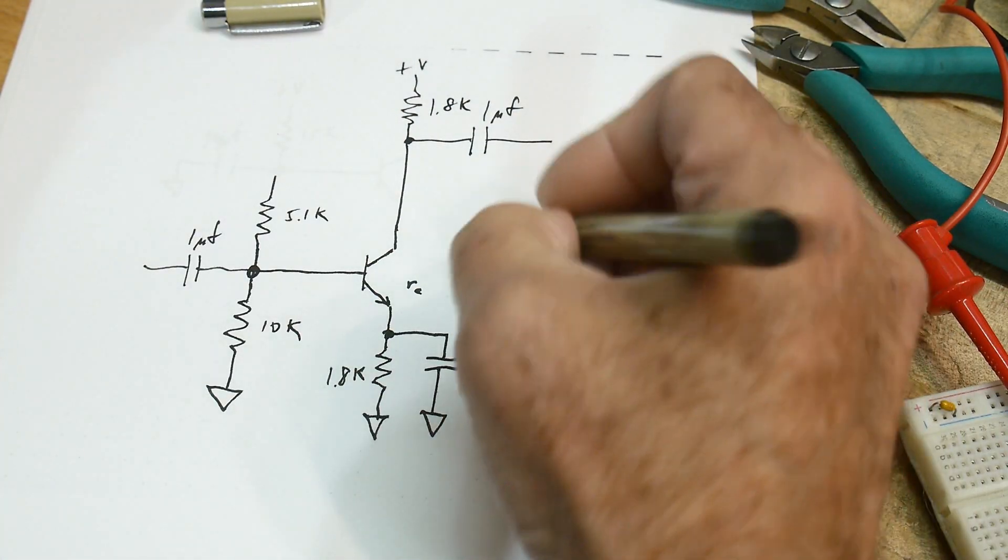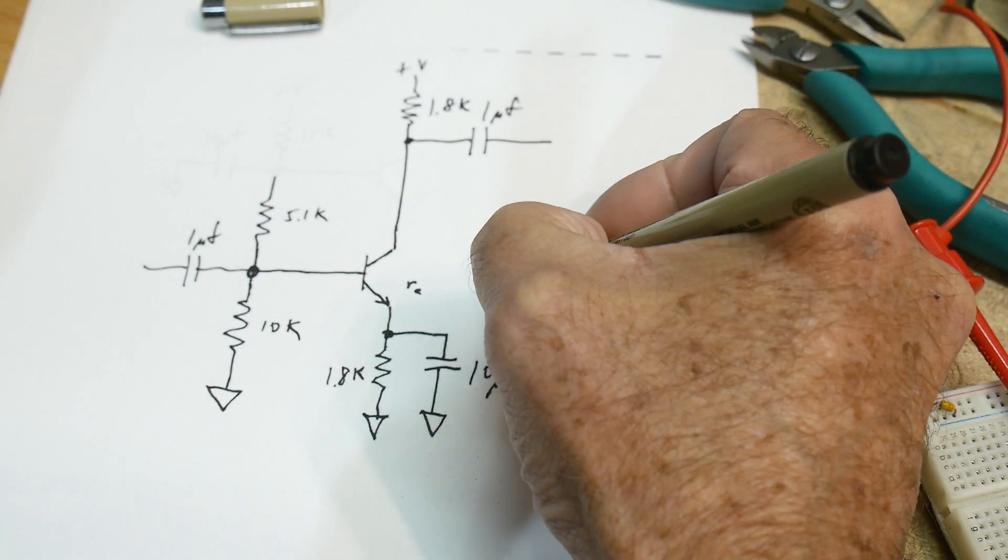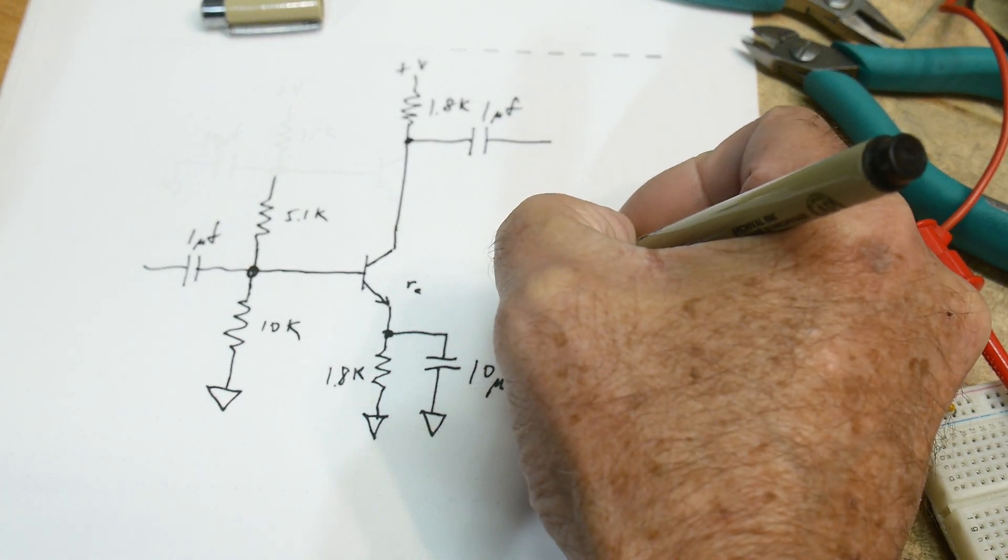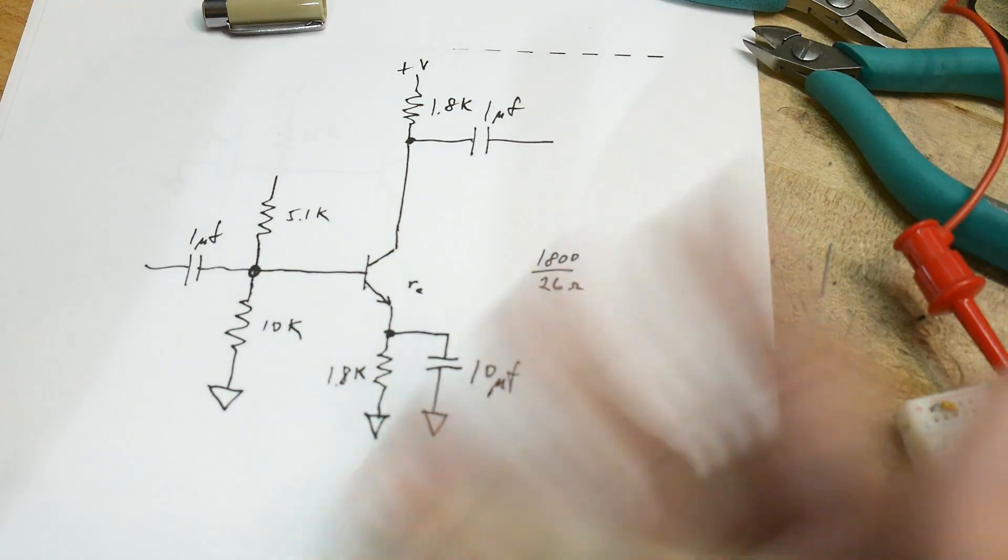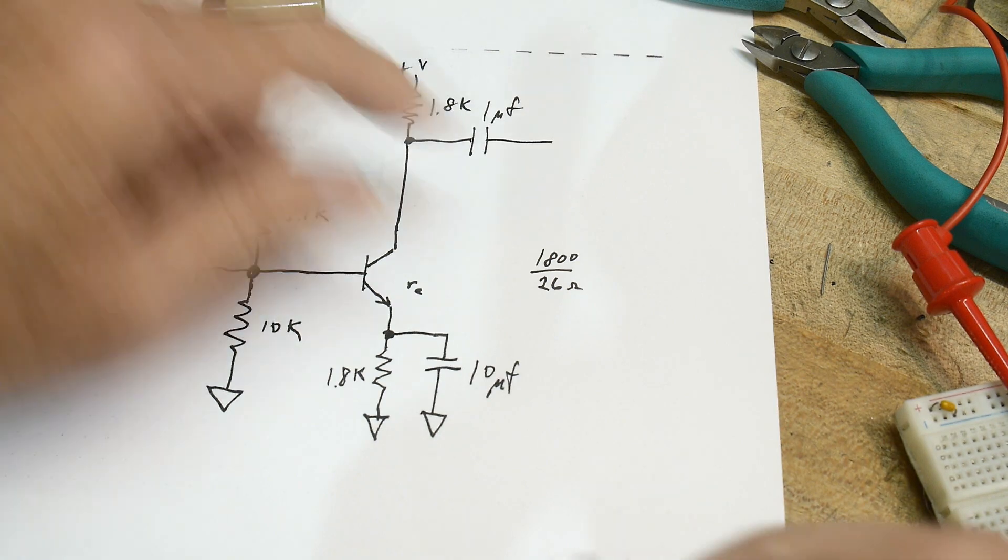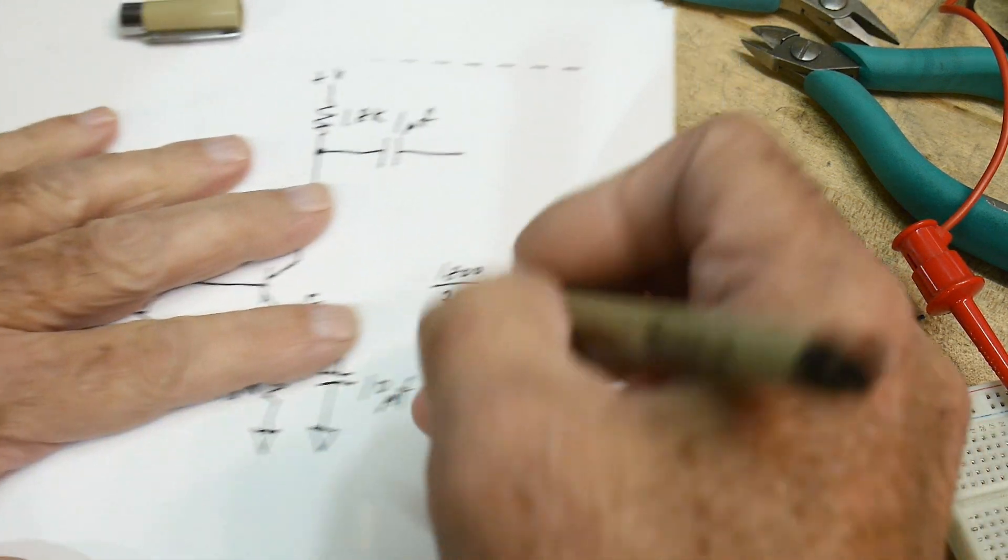Just rules of thumb, 26 ohms is sometimes 25 ohms, 26 ohms at about a milliamp kind of thing. Anyway, it's around this number, okay?